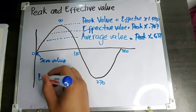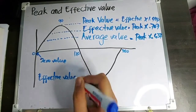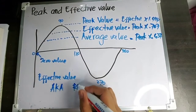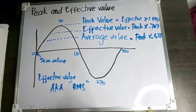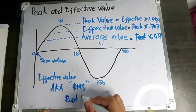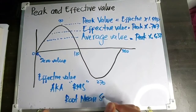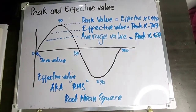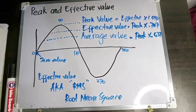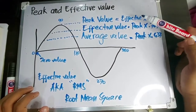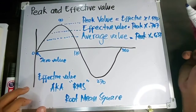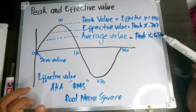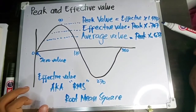Effective value, aka also known as RMS — root mean square. Kung gusto mo namang malaman yung effective value niya, peak value times 0.707. Then kung average value naman, peak value times 0.637. Kailangan alam natin itong formula na ito kapag mag-take ka ng board exam.